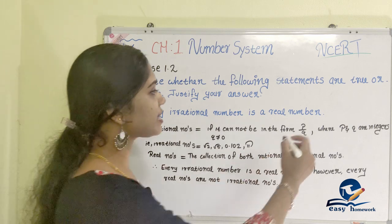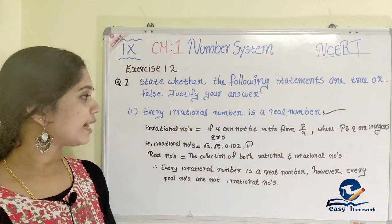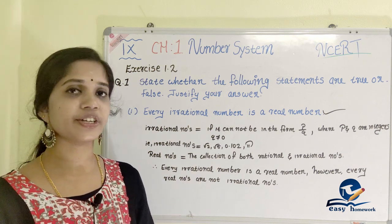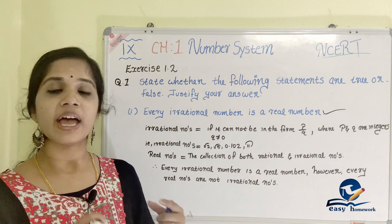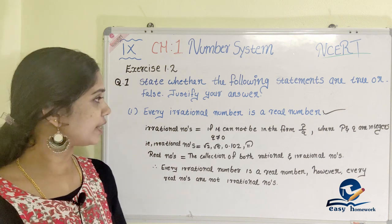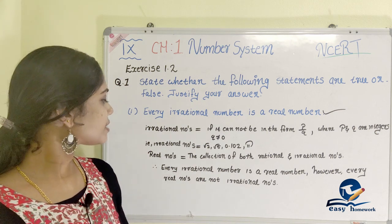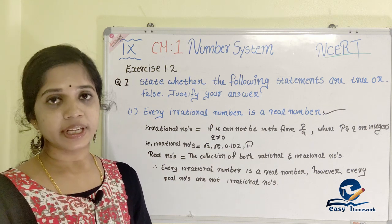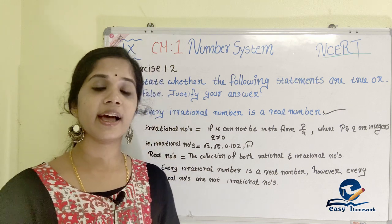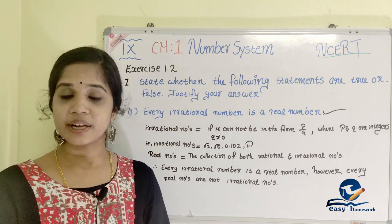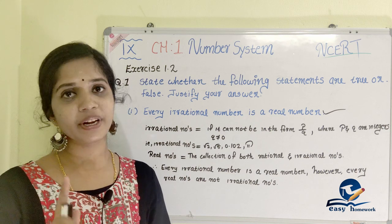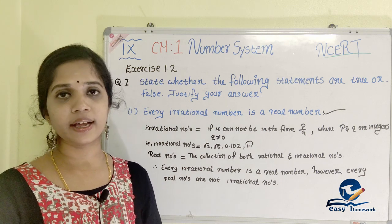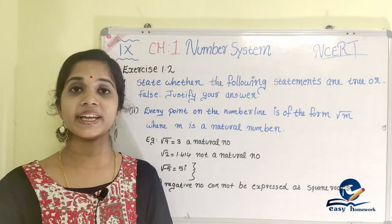So what is this statement? True. Because real numbers include both irrational numbers and rational numbers. If we have an irrational number, we have a real number, so the statement is true. Let's go to the second statement.